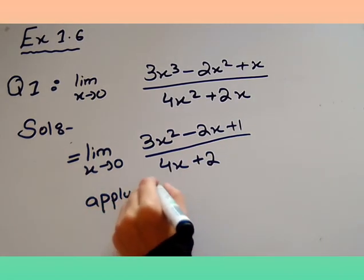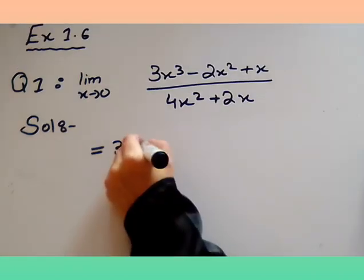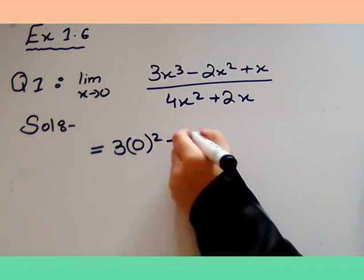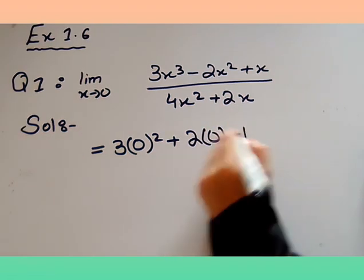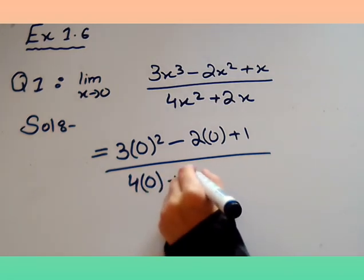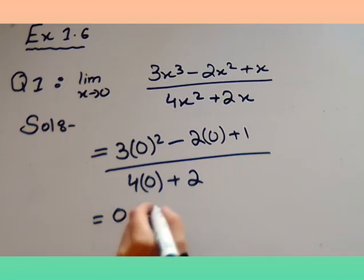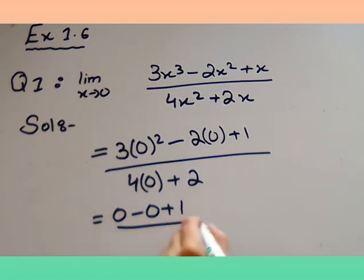So, 3(0)² - 2(0) + 1 divided by 4(0) + 2. Here we have 3 multiplied by 0 squared, so 0, minus 2 multiplied by 0, so 0, plus 1. We have this divided by 4 multiplied by 0, so 0, plus 2. So here we have 0 - 0 + 1 divided by 0 + 2, which equals 1 divided by 2.